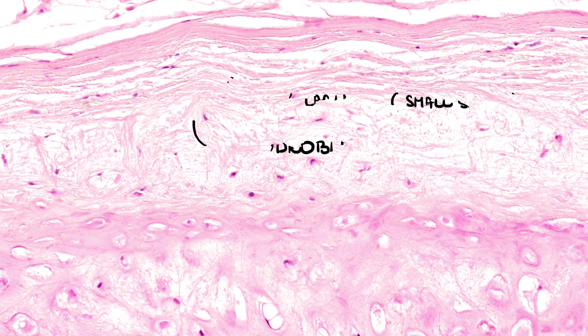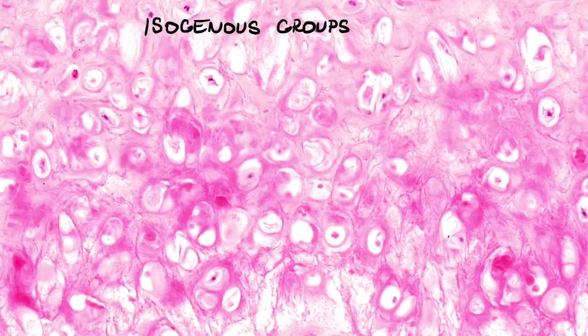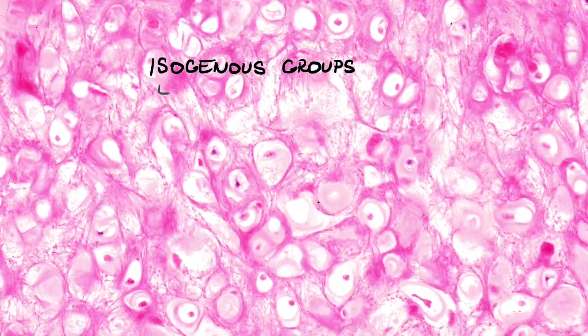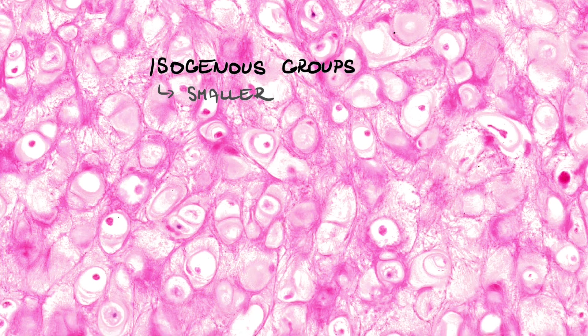Isogenous groups are smaller, containing fewer cells, if we compare it to hyaline cartilage. Also, the ratio of cells to extracellular matrix is higher compared to hyaline cartilage.